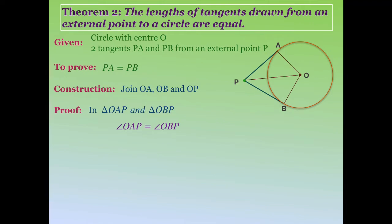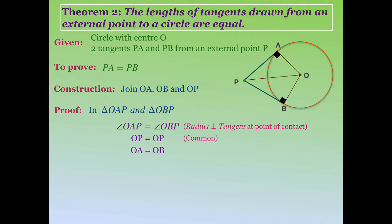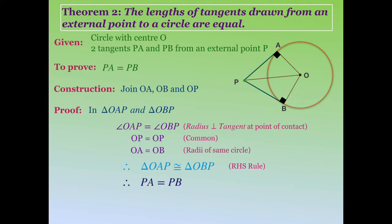In triangles OAP and OBP: angle OAP equals angle OBP, since the radius at the point of contact is perpendicular to the tangent. OP is a common side, and OA equals OB as they are radii of the same circle. By the RHS congruence rule, triangle OAP is congruent to triangle OBP. Since the triangles are congruent, their corresponding parts are equal, so PA equals PB by CPCT.